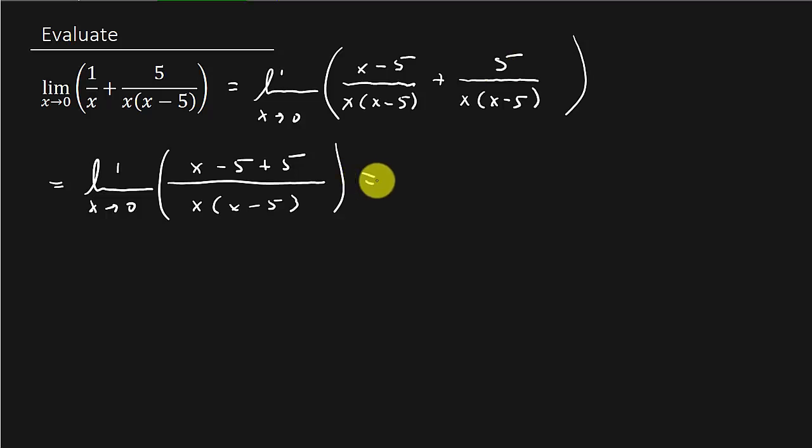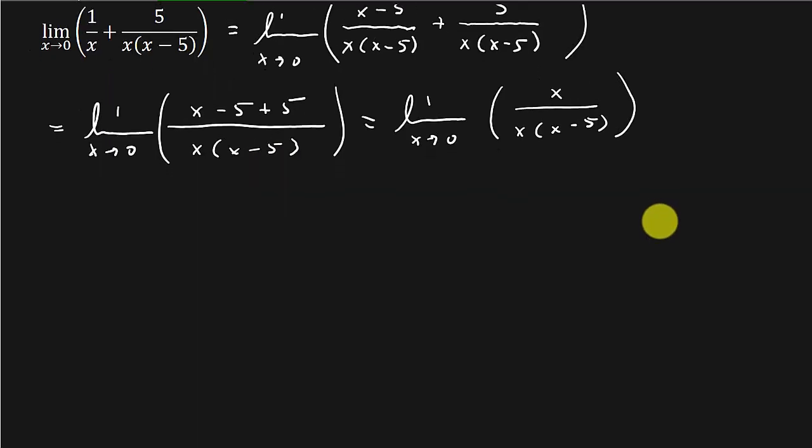Alright, so now we can see we've got the limit as x goes to 0 of x over x times x minus 5.